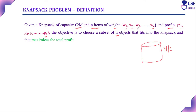Any combination of objects — such as W1, W2, W5, or W2, W9 — can be chosen, such that they fit into the knapsack, meaning the total weight should not exceed the maximum capacity. The main objective is to maximize the total profit.